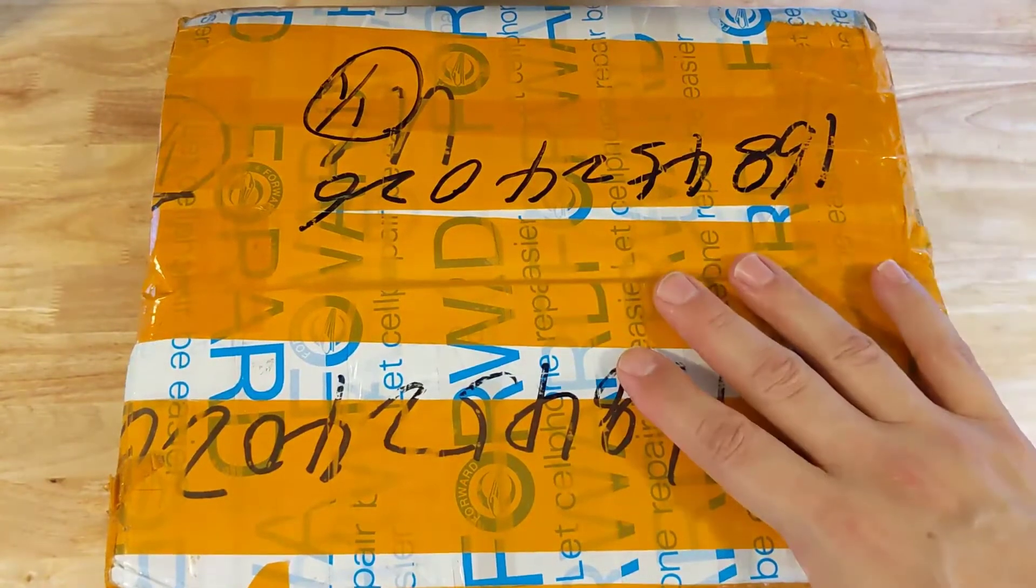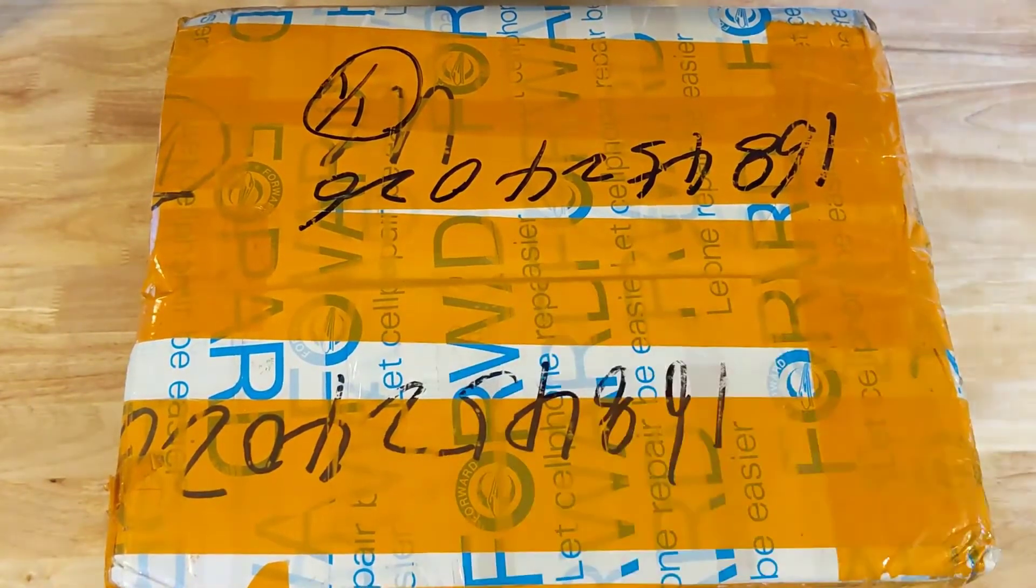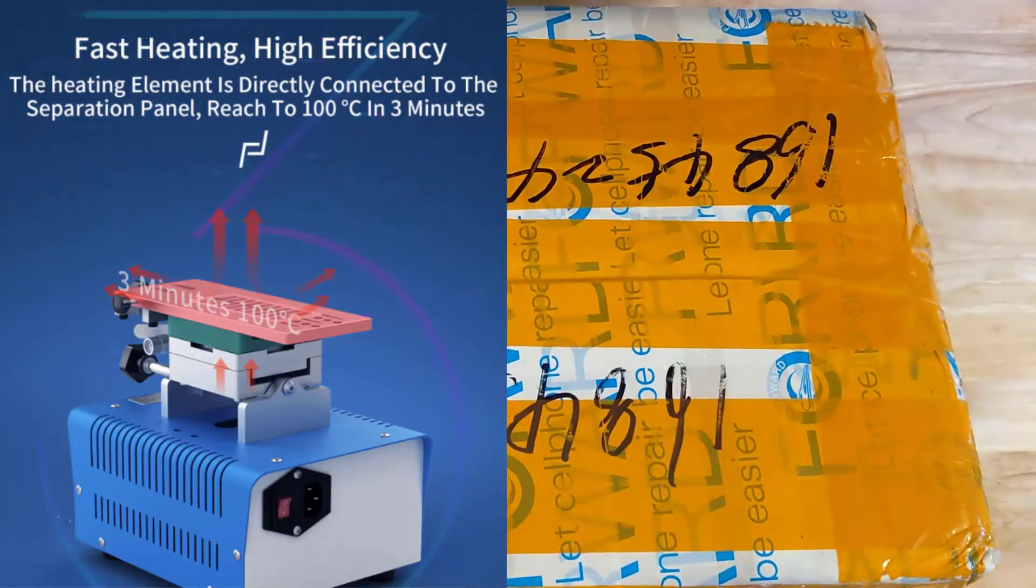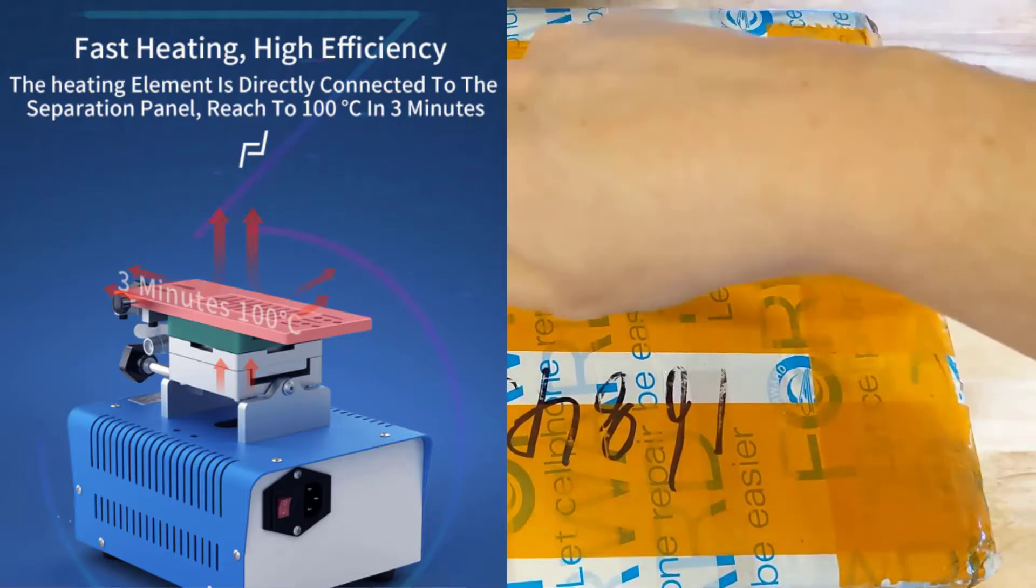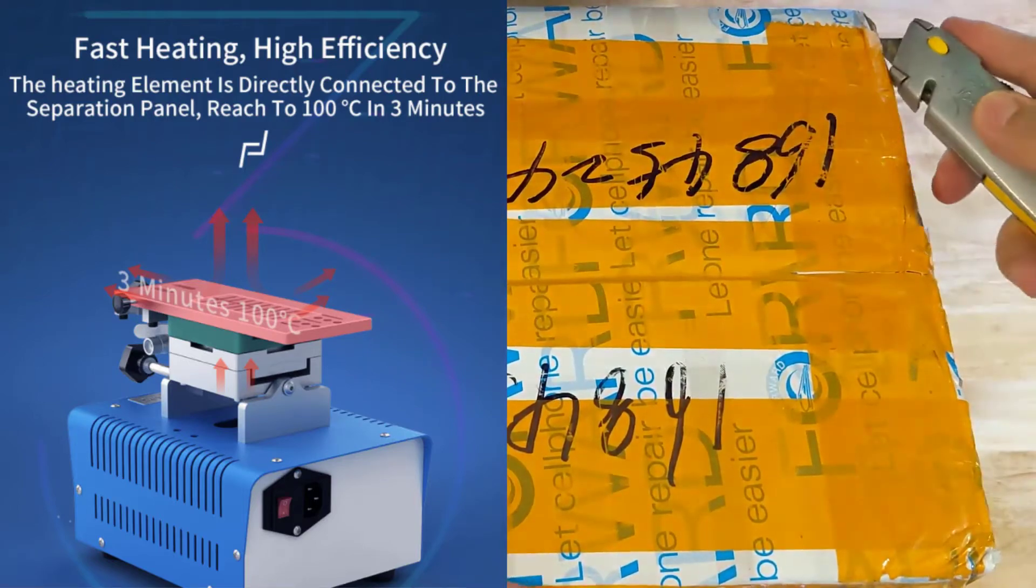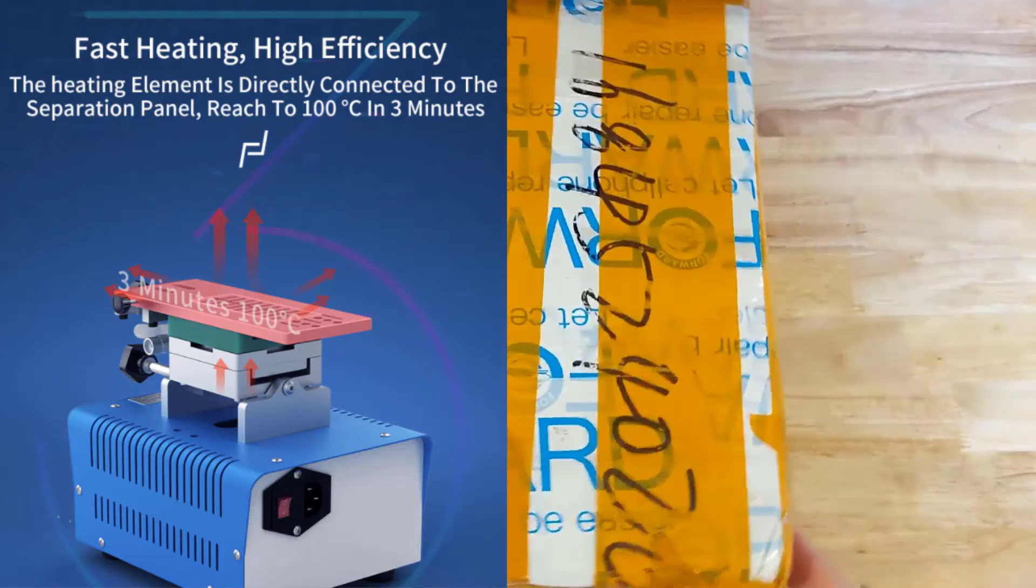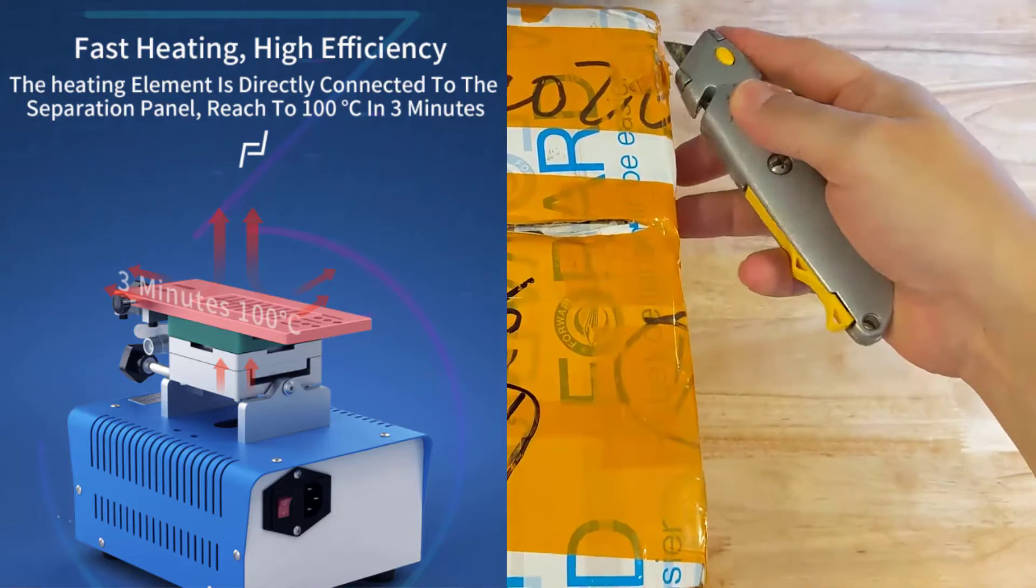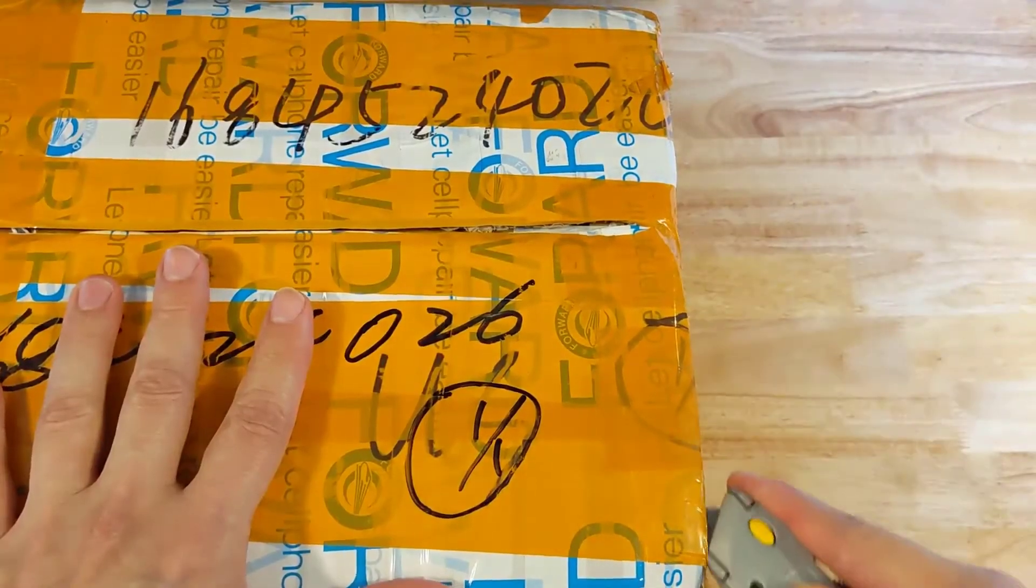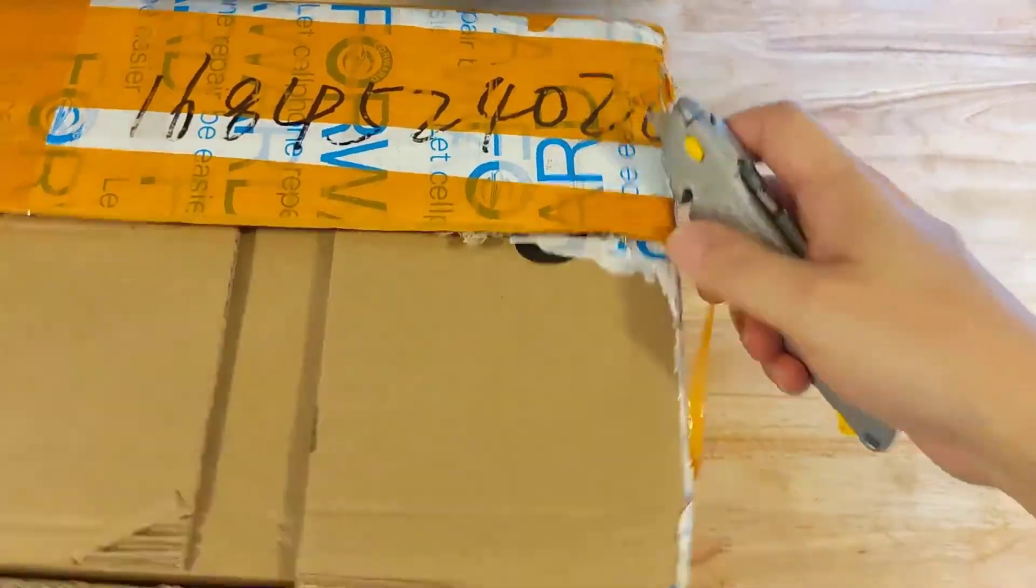Some of the features are it will get from zero degrees to 100 degrees Celsius, and it will do that in three minutes or less, which is a nice feature. When you transfer that into Fahrenheit, 212 degrees approximately, from zero to 212 degrees Fahrenheit.